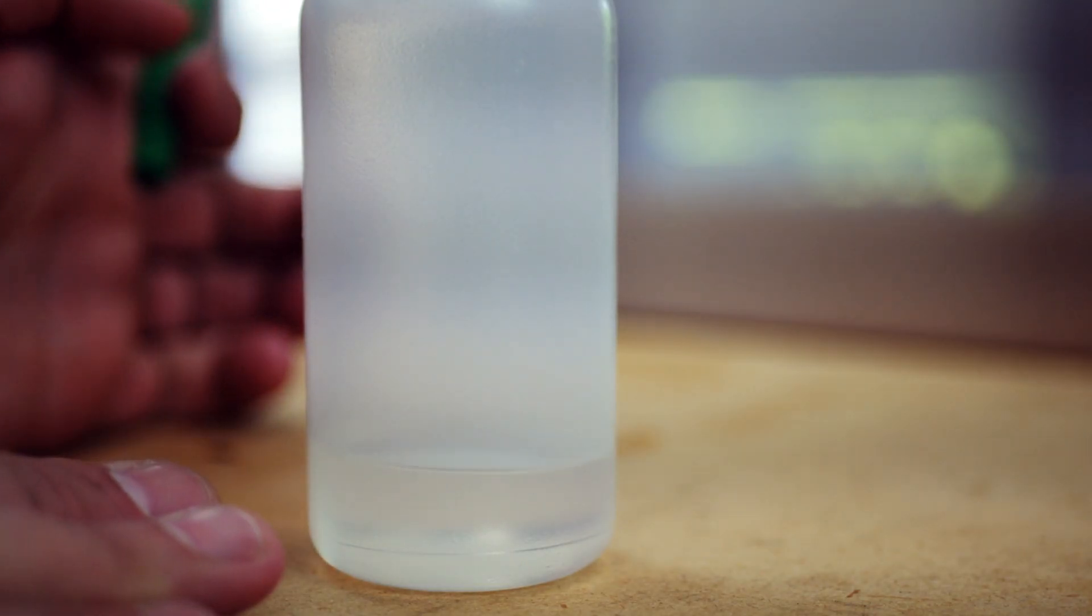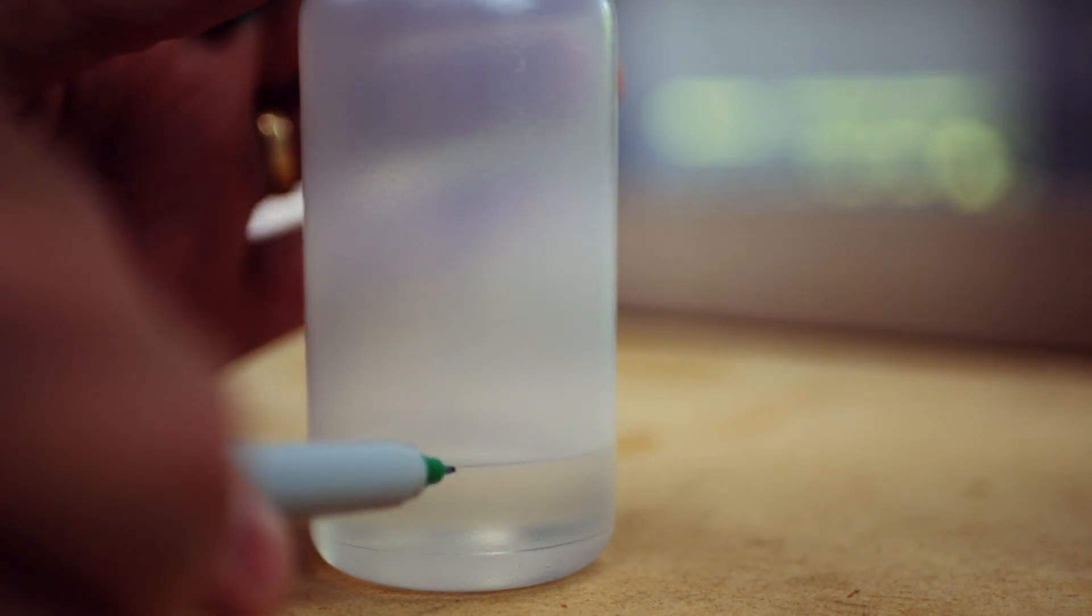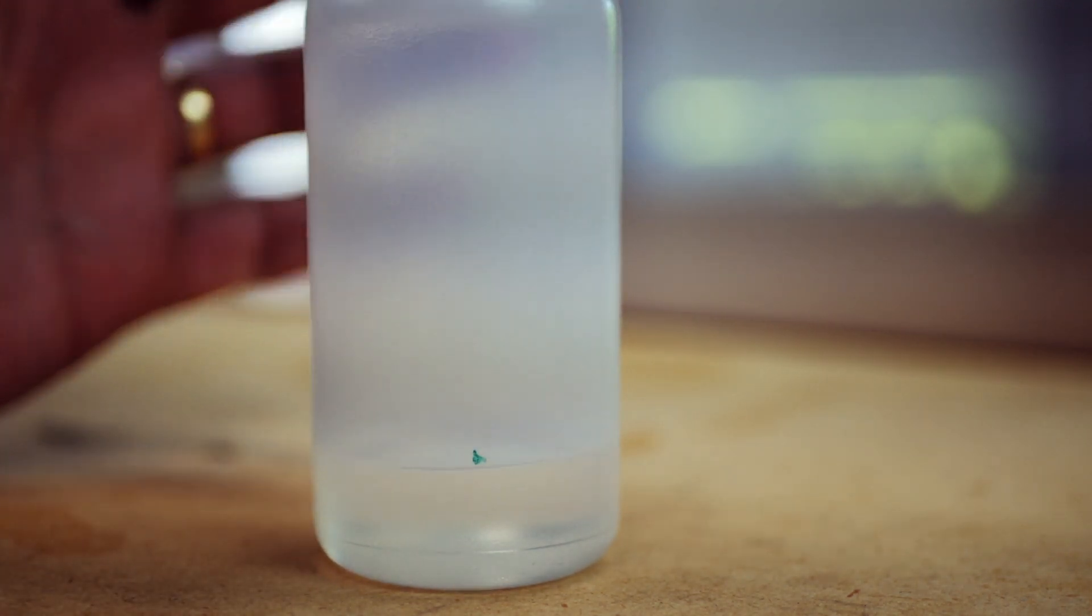Now you want to let this settle out, and you'll be able to see the level where one ounce of fuel is. We just let it settle out, and what I'm going to do, I'm just going to put a little mark right there, just like that. Not perfect, just a little mark.